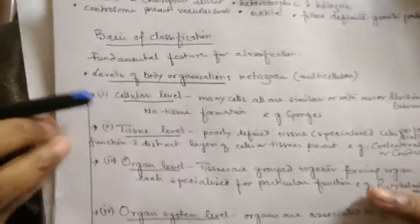Today we will mainly focus on the basis for the classification of animals. We know that animals are classified into various phyla, then order and so on. The basis of classification are: body organization, body symmetry, body plan, body cavity, segmentation, and the presence of notochord. On these bases, animals are mainly classified.